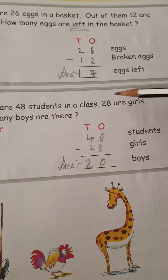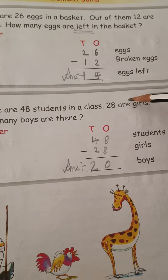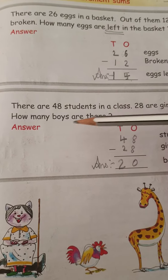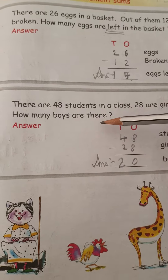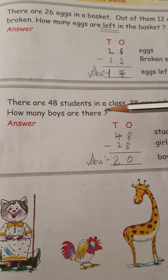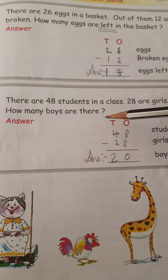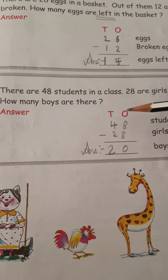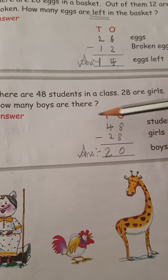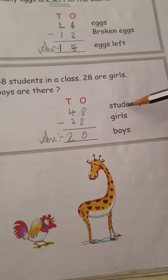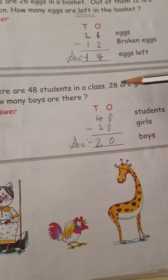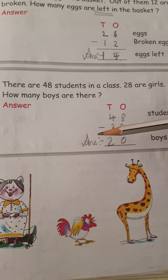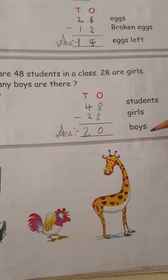Out of 48, 28 are girls. How many boys are there? You have to find out how many boys in your class. In a subtraction, always write the big number first — 48 students, then 28 girls, then subtract. The answer is 20 boys.